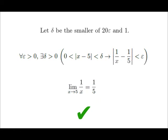So if we let delta be the smaller of 20 times epsilon and 1, we can say that for all epsilon greater than 0, there exists a delta greater than 0, such that if the absolute value of x minus 5 is greater than 0 and less than delta, then the absolute value of 1 over x minus 1 fifth is less than epsilon, and the limit is proven.